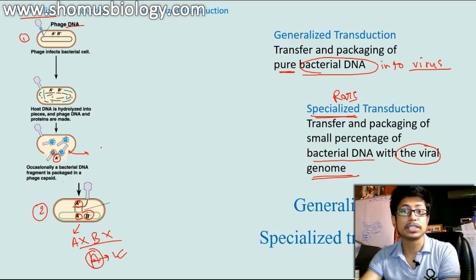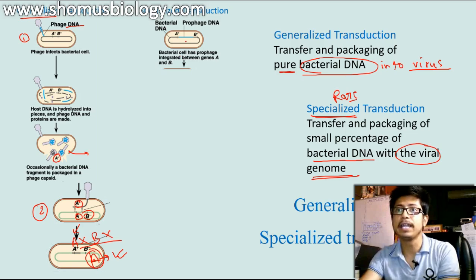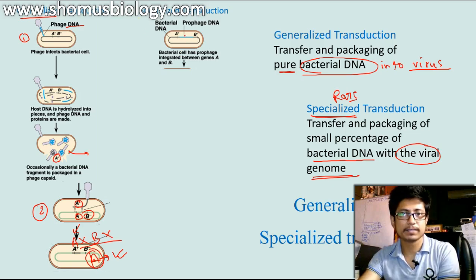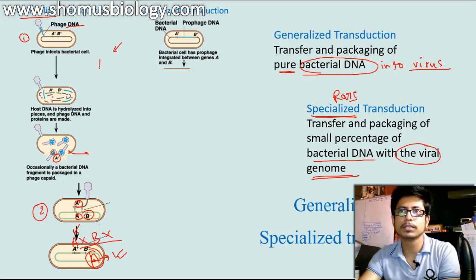Looking at the second type — specialized transduction — it starts with more or less the same situation where we have the bacterial cell with two genes, A plus and B plus present, so they can produce the A and B products inside. Bacteriophage infects this bacteria, but in this case the phage is not a lytic type of phage — it is a lysogenic type of phage. Remember, there are two types of bacteriophage life cycles possible: lytic and lysogenic.